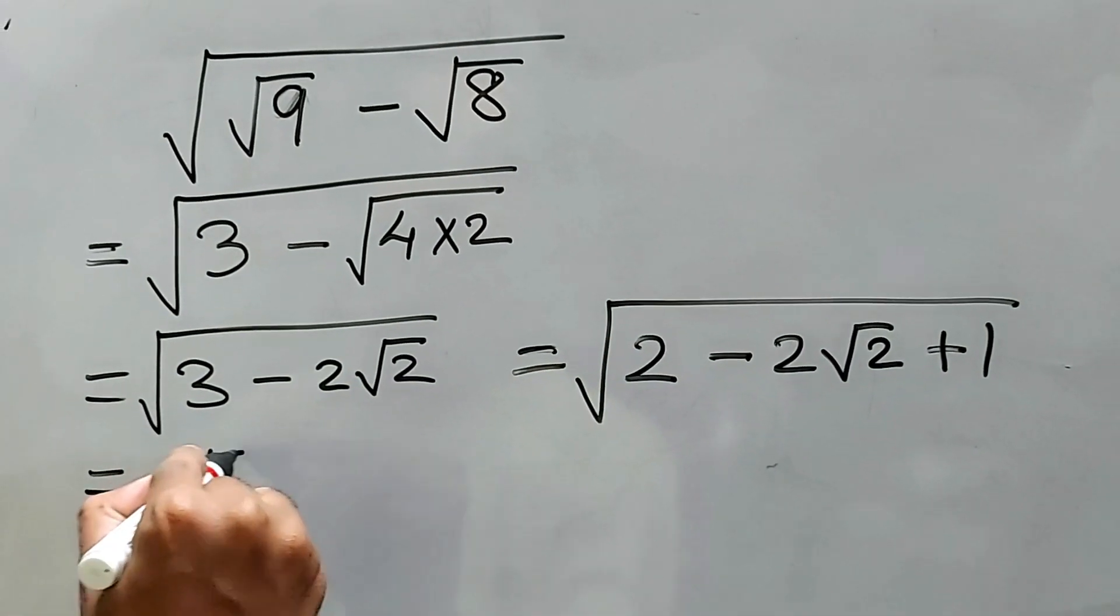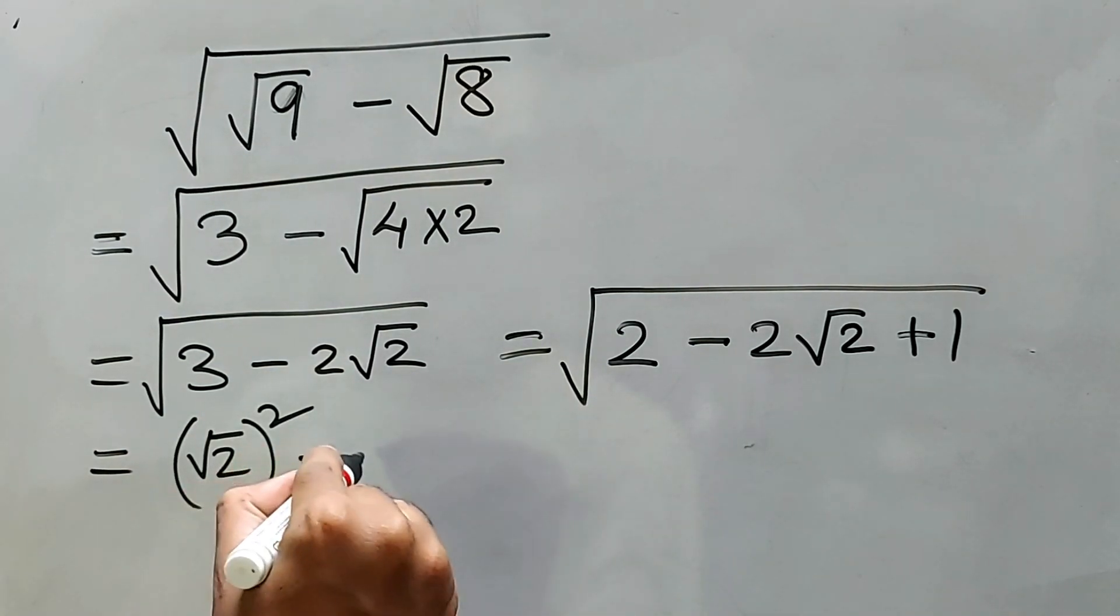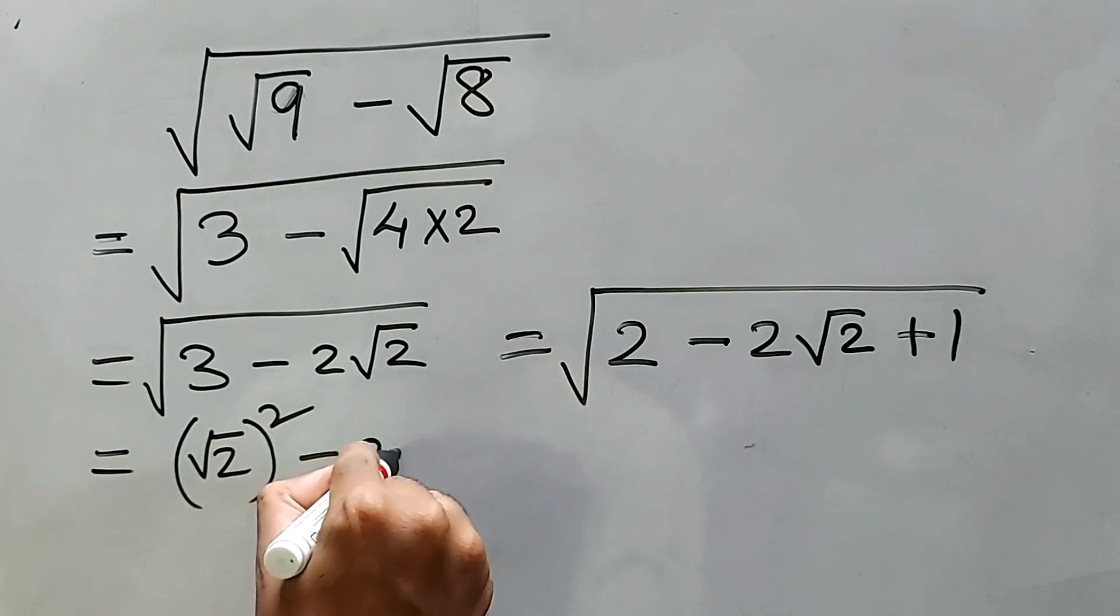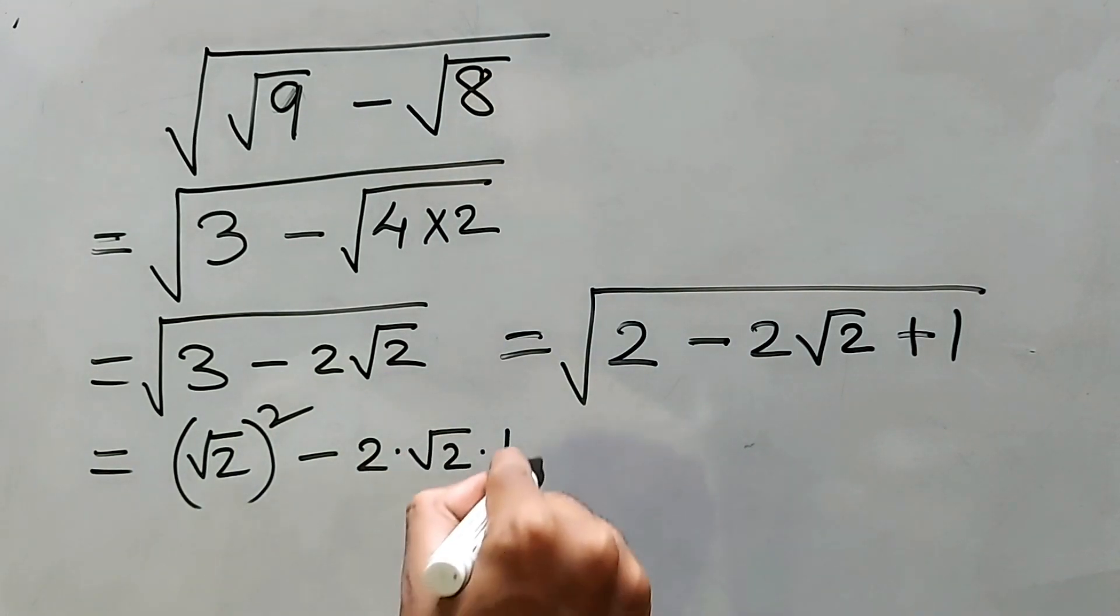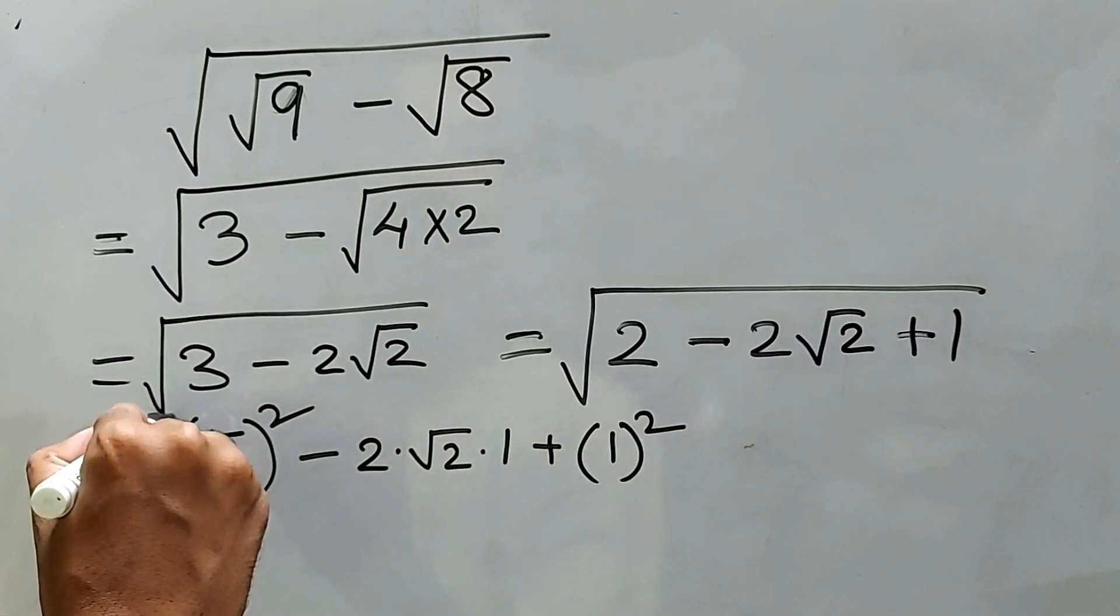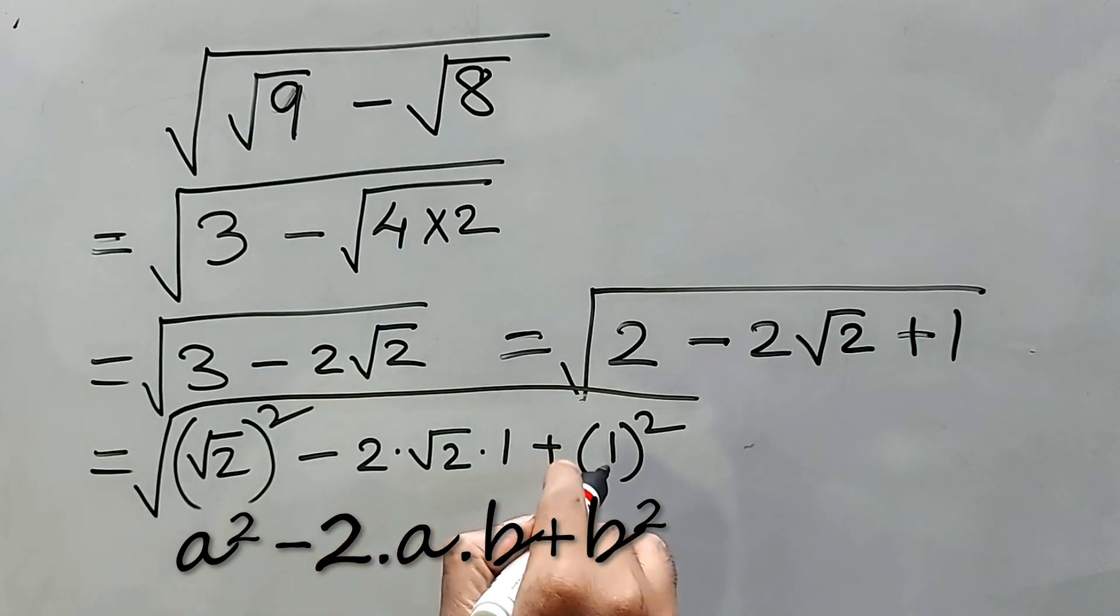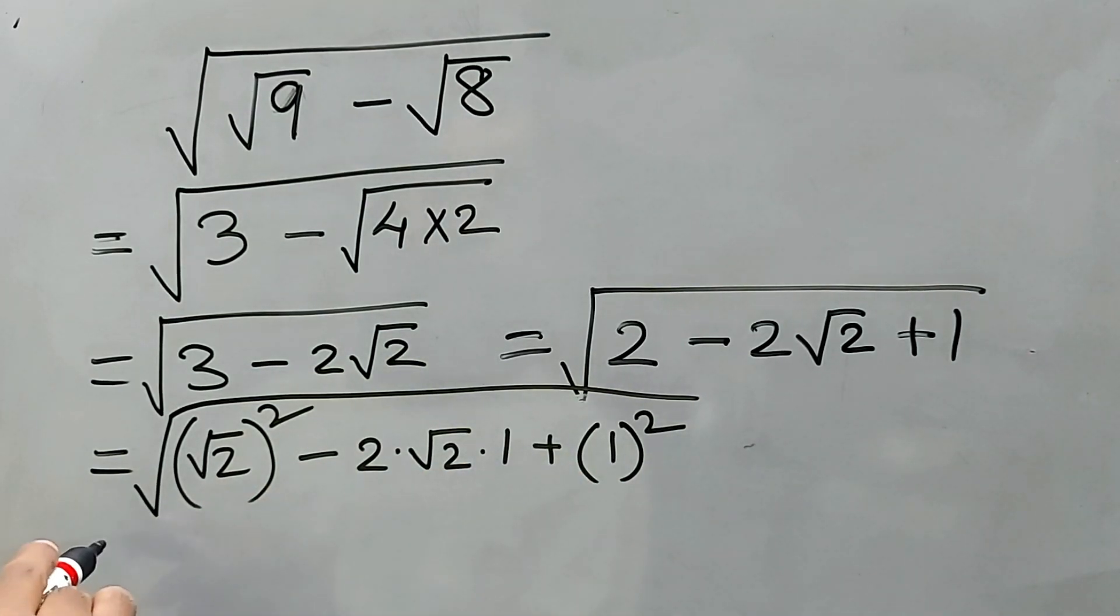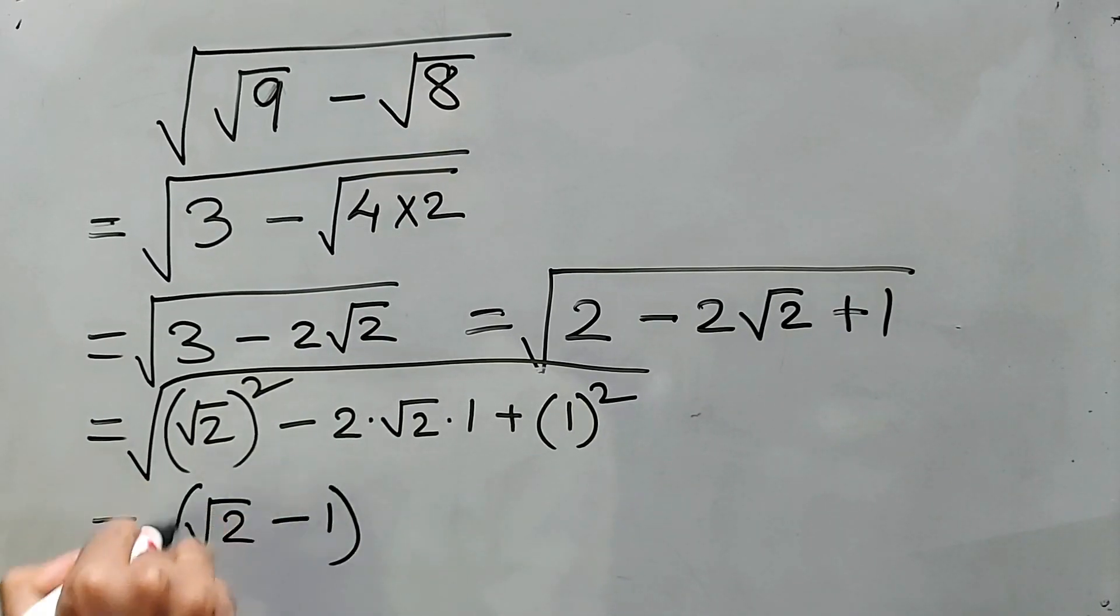See this. 2 means square root of 2 whole square. Can we write this? And this is a square. 2 into square root of 2 into 1. Is it fine? 1 plus 1? 1 we can write anything? Complete square root. Sorry for this. This is fine, right? And we know this is a square. This is 2ab and this is b square. So this one will be square root of 2 minus 1 whole square.